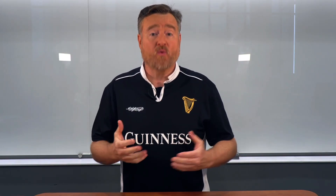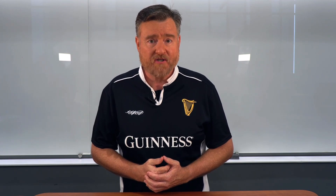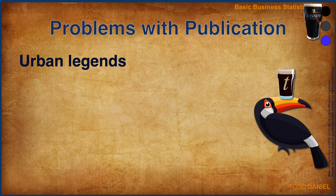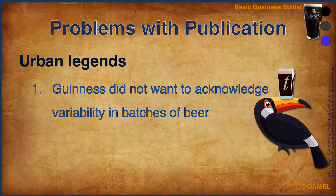Having put in so much work, understandably, Gossett wanted to publish his tables. And here is where he ran into another problem — Guinness did not want him to publish. One mistaken explanation is that Guinness did not want to acknowledge that there was variability in their batches of beer, wanting to pretend that every Guinness was exactly like every other Guinness. This explanation is highly unlikely, especially considering that Guinness was employing these scientist brewers to improve the consistency of the batches of beer. Variability in beer was no secret.